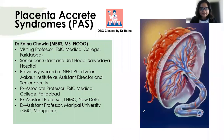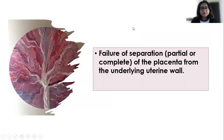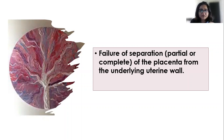Today's class is on placenta accreta syndromes, or PAS. Placenta accreta syndromes are a spectrum of disorders where the placenta fails to separate either partially or completely from the underlying uterine wall. Normally, you would have heard of placenta previa — when the placenta is implanted on the lower uterine segment.